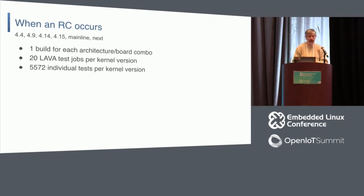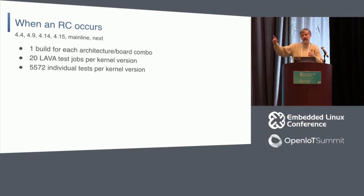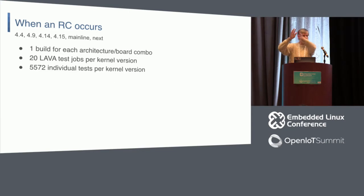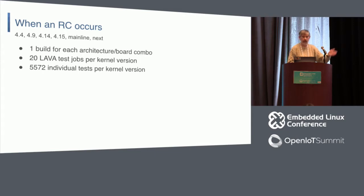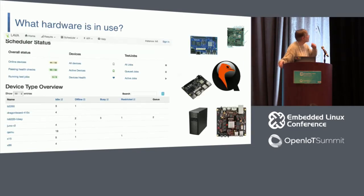In statistical terms: anytime a 4.4, 4.9, 4.14, 4.15, mainline, or next set of changes lands, that kicks off some set of builds depending on the board, operating system combination, kernel version, and test case version. You've got several different things you want to minimize change on. Once builds are done, we kick them off into the LAVA farm — that's ultimately about 20 LAVA jobs per kernel version, and about 5,500 individual tests ultimately run per kernel version. It's a lot of activity when you see a new LTS release or a new RC.